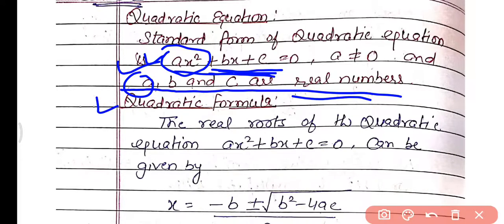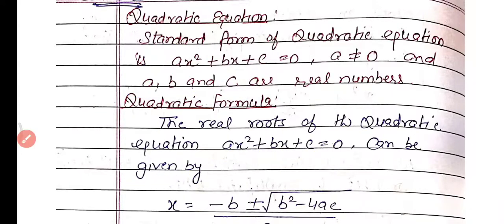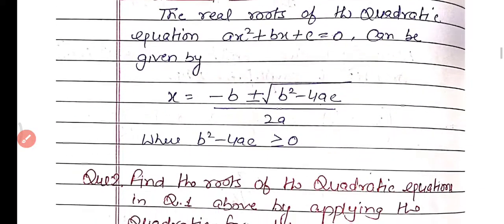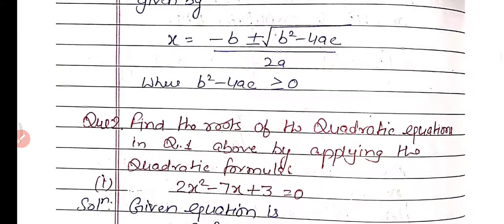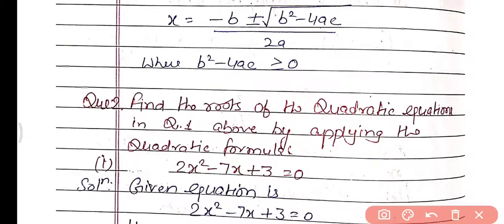So now the quadratic formula. The real roots of the quadratic equation ax² + bx + c = 0 can be given by the formula: x = (−b ± √(b² − 4ac)) / 2a, where b² − 4ac ≥ 0. The term under the square root can be 0 or greater than 0 for real roots.